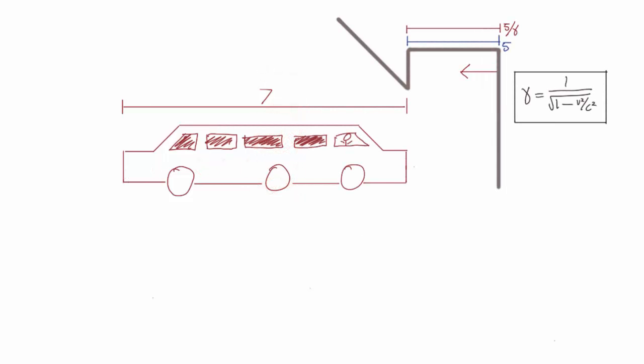Let's stick in some concrete numbers. Alice's limo is seven meters long in her reference frame and the garage has been contracted to a length of five over gamma. Now let's suppose Alice is driving so fast that gamma is equal to two. In this case, what is Alice's velocity?